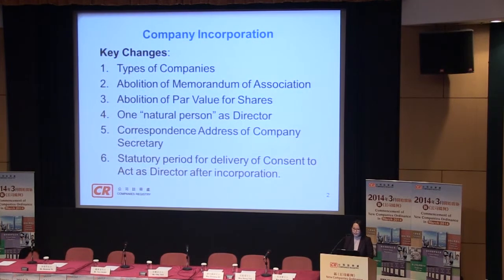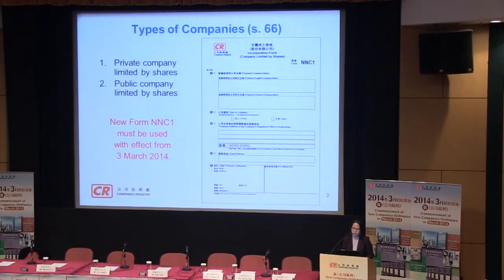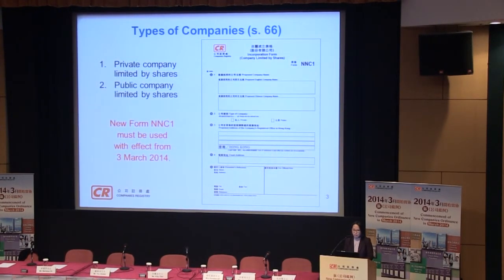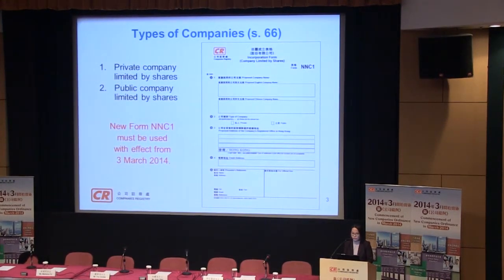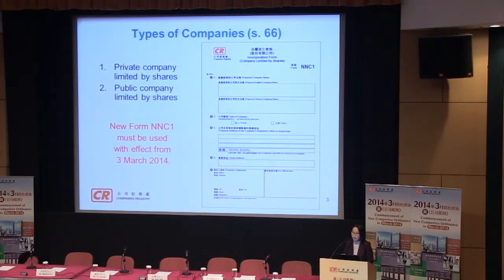I will now take you through them one by one. Types of companies: eight types would be reduced to five. The first two are very well known — Profit Company Limited by Shares and Public Company Limited by Shares. If you want to incorporate either of these two, you need only to submit NC1 from the 3rd of March this year. You must use the new form NC1.